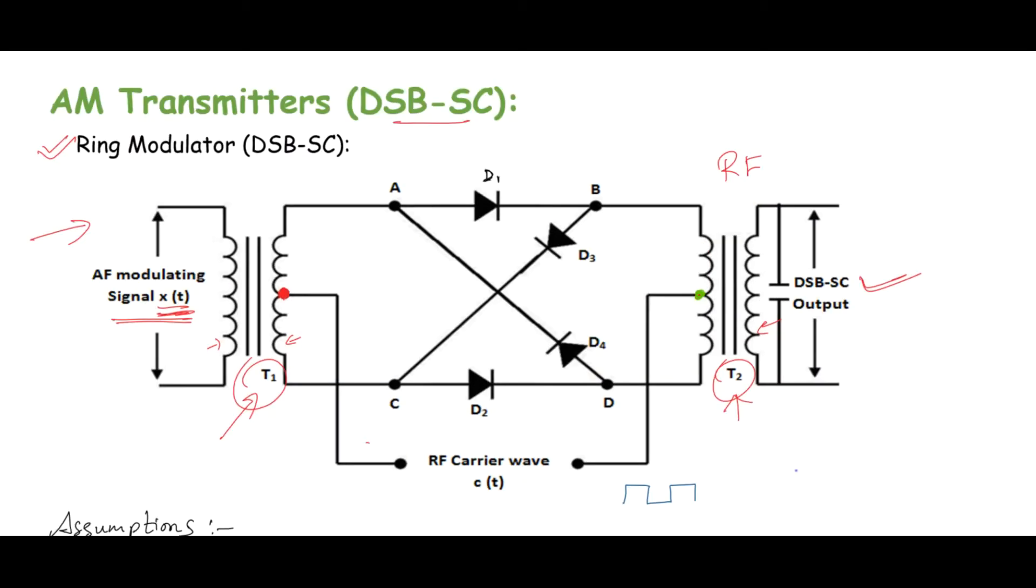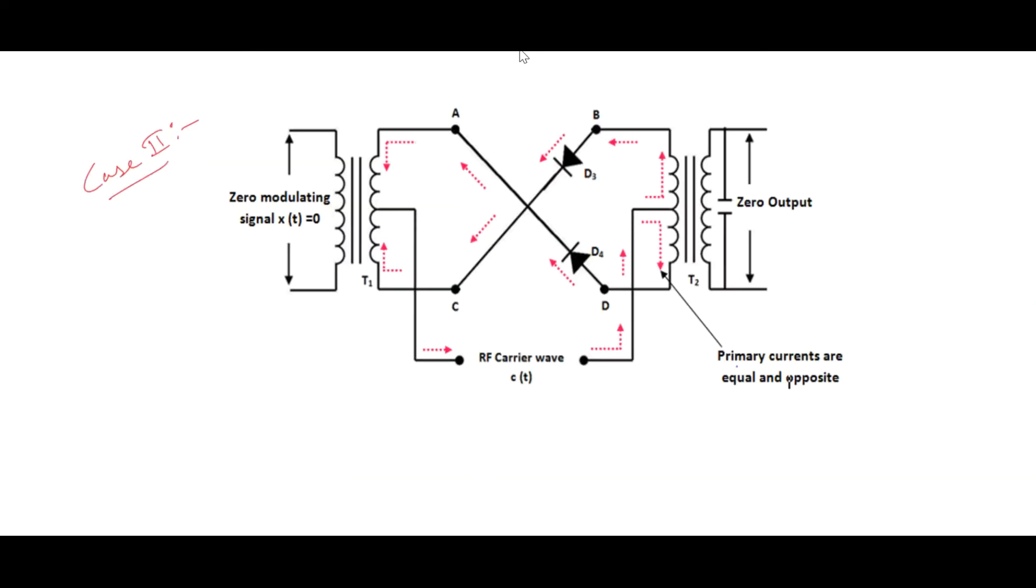So that's how it works for the positive cycle. Now let's see for the negative one. As the terminal connected to center tap of secondary winding of T1 goes negative and another terminal goes positive, diodes D1 and D2 will act as open circuit, whereas D3 and D4 will start to conduct. The equivalent circuit will look like this.